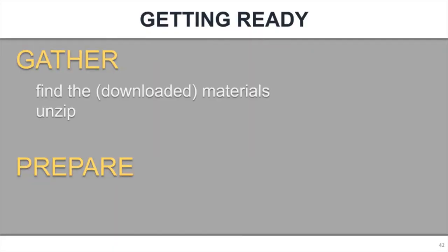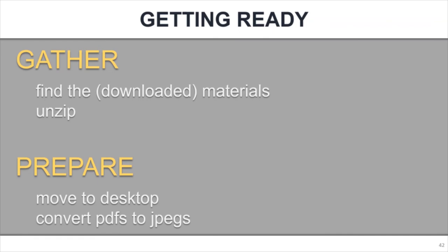At this point I'll check that everyone has downloaded everything, then we'll gather and move those download materials to the desktop, unzip, and make sure everyone knows what they're doing. If you have PDFs, you'll need to convert them to JPEGs, and then we're off to the races. That's the talk I'm going to give today. If you have any questions about what I did, how I put it together, or especially if you have any corrections about my fact pattern, I'd love to hear from you in the comments. Thanks for watching, and I'll see you on the next one.